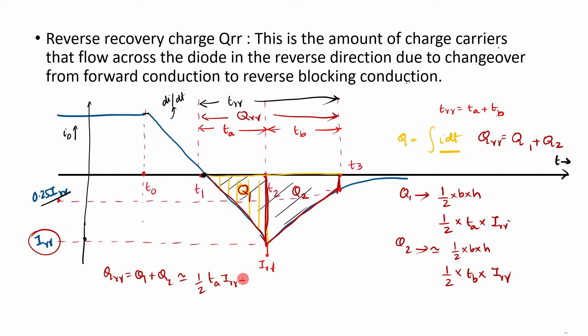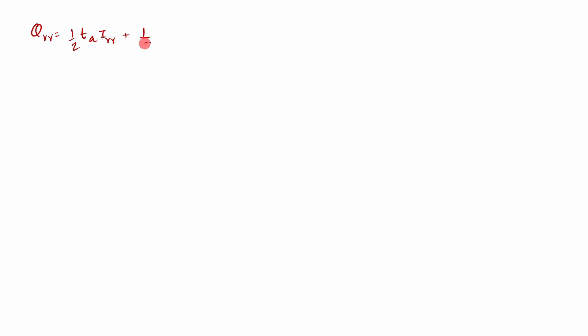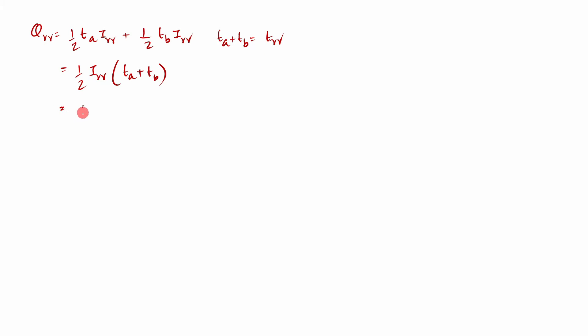Therefore QRR equals Q1 plus Q2, which is roughly equal to half times ta times IRR plus half times tb times IRR. Simplifying, we can take IRR outside: QRR equals half times IRR times (ta + tb). Since ta plus tb equals the reverse recovery time TRR, this becomes QRR equals half times IRR times TRR. This is an important result.